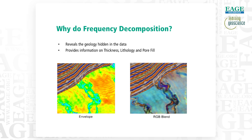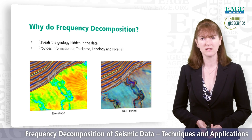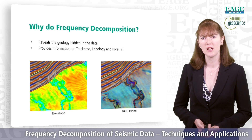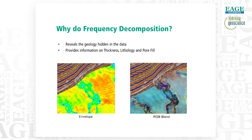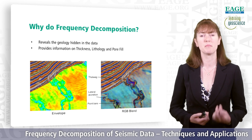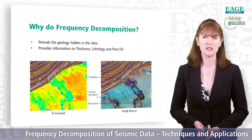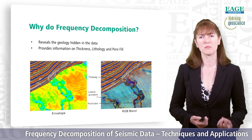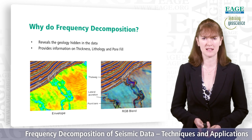Now we can see clearly that we've got two channels cutting across this horizon. We can see the edges very clearly, and we can also start to see internal heterogeneity — the Thalweg coming through, lateral accretion parts, and point bars as well. By looking at frequency decomposition and a blend of multiple magnitude volumes, we can get more insight into the geology that's in our data.